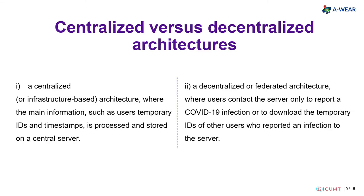There are two main concepts for architecture. The first is a centralized architecture, where the main information such as users' temporary IDs and timestamps are processed and stored on a central server. Thus, the server has all the information about all users using the app.